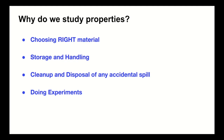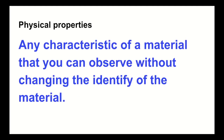Properties can be two kinds — they can be physical and chemical. In this video, we're going to focus on physical properties. Physical properties are basically things you can observe without changing the identity. So you could observe the color, you could observe the shine, its malleability, all without changing the material.